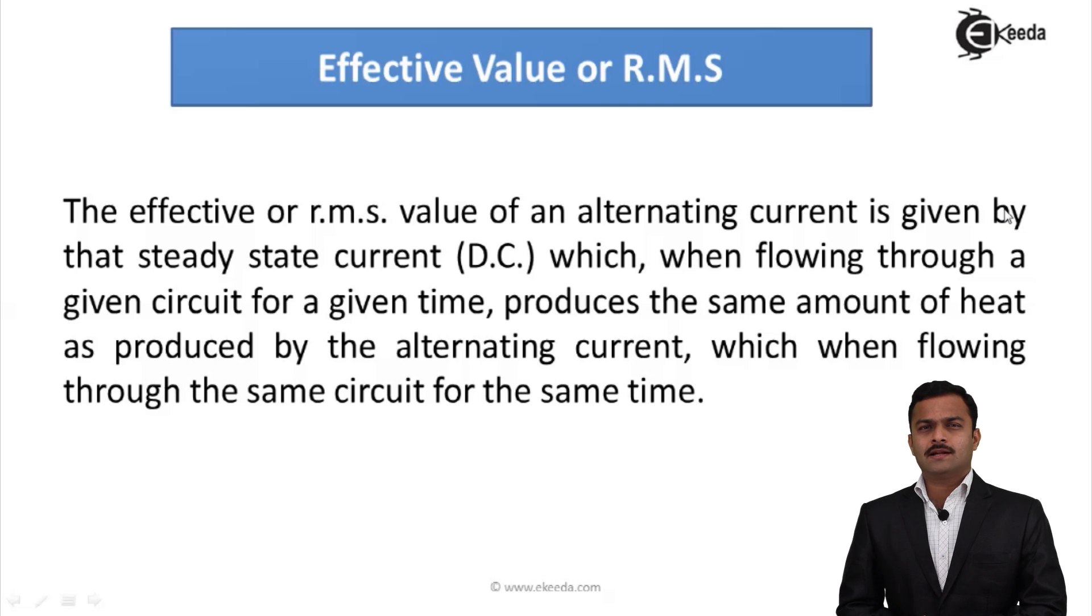The effective or RMS value of an alternating quantity is given by that steady current which, when flowing through a given circuit for a given time, produces the same amount of heat as produced by the alternating current which, when flowing through the same circuit for the same time.